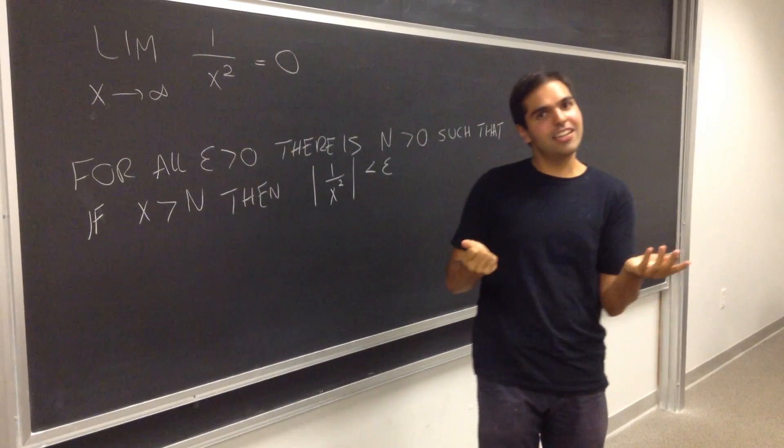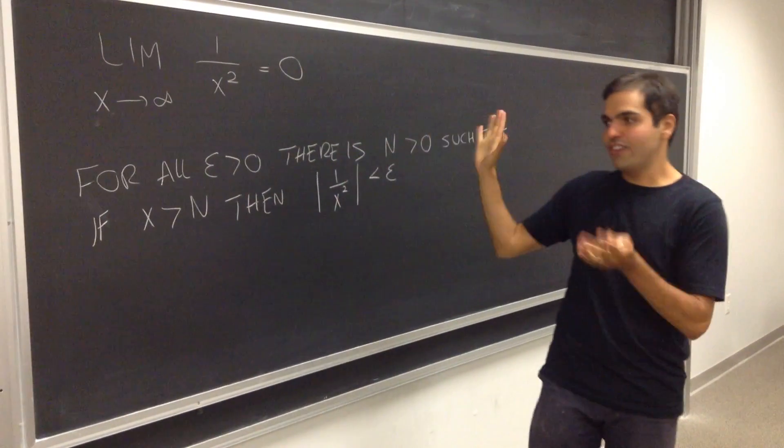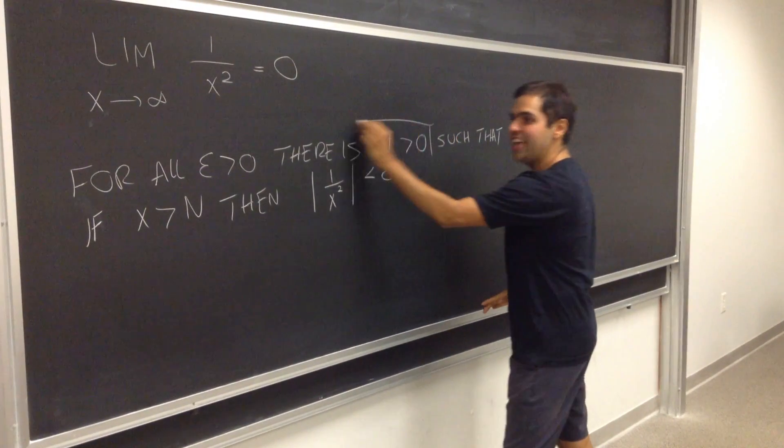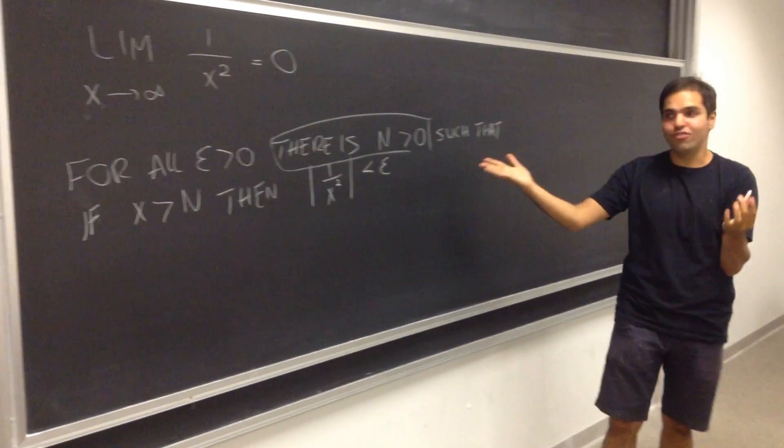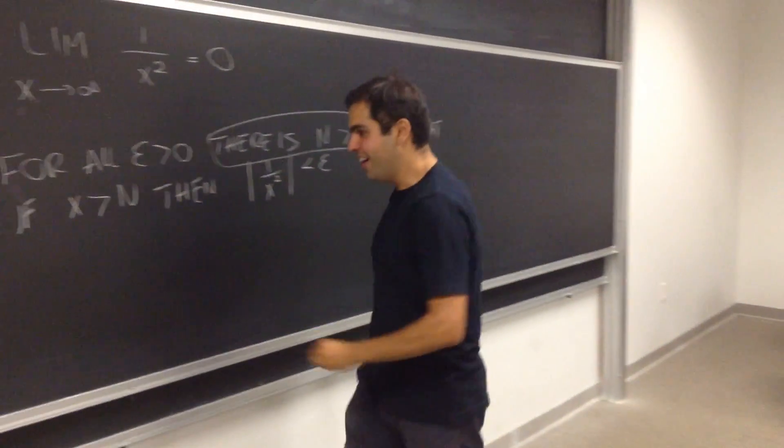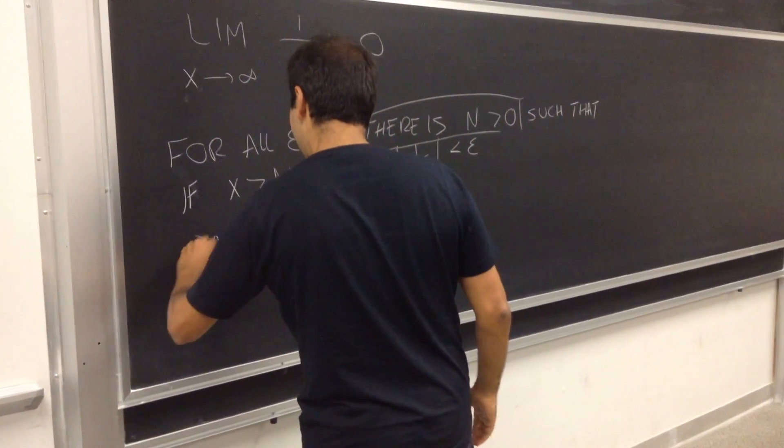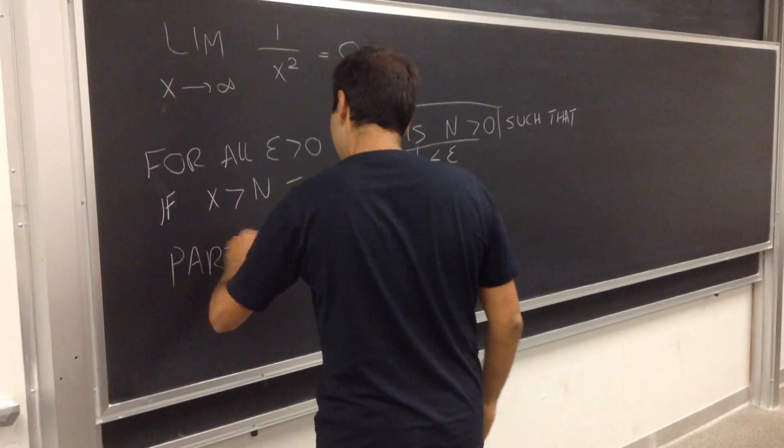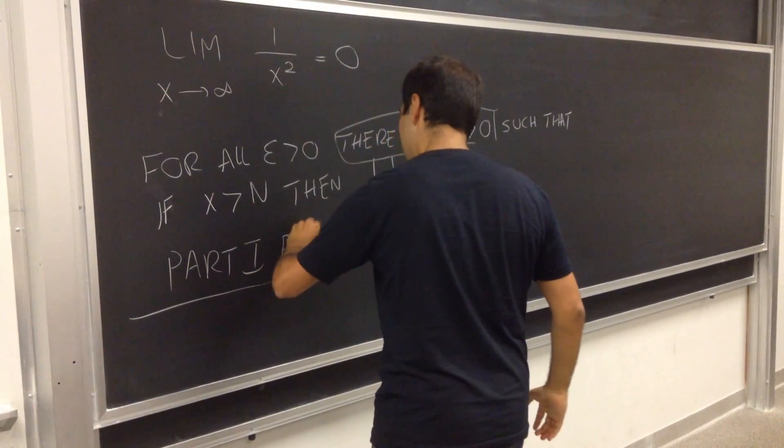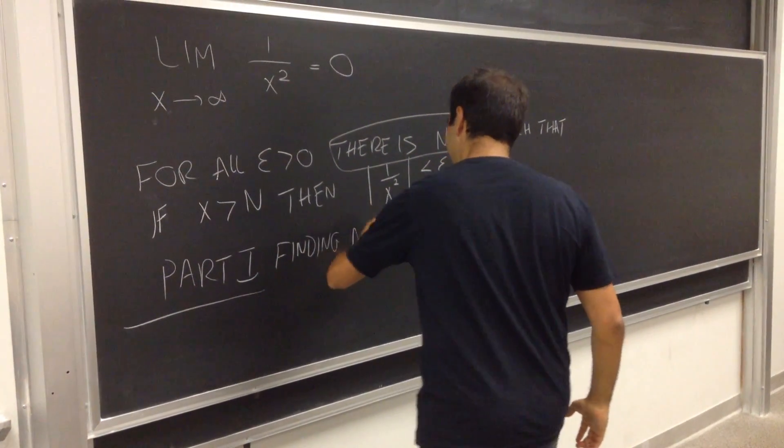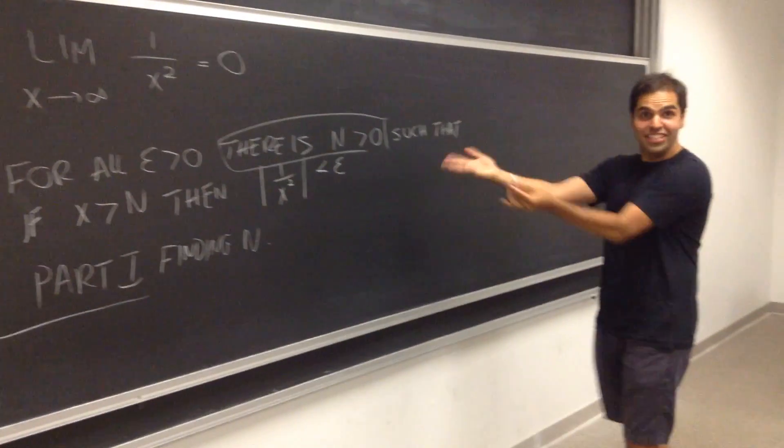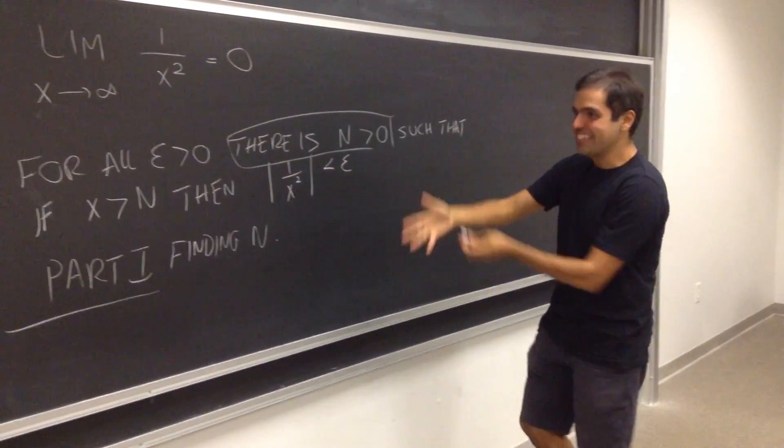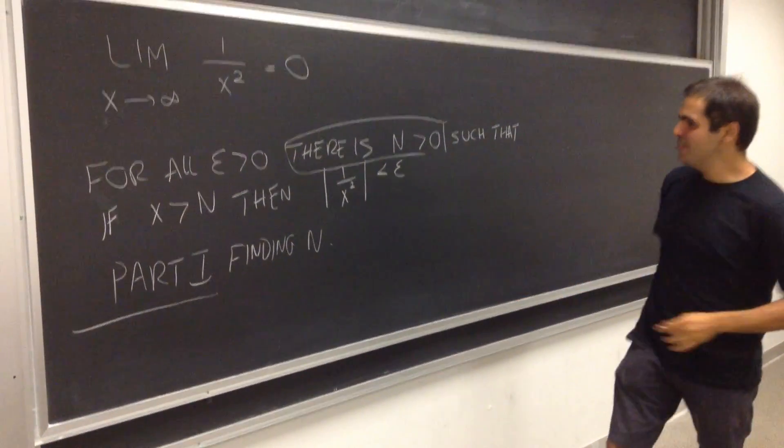Namely, as I said last time, before we had to find delta, here we say that there is N, which means that we have to find N. So part 1, as before, finding N. Finding N, so like the sequel to finding Nemo, you know, here it's a big Nemo, a huge one.